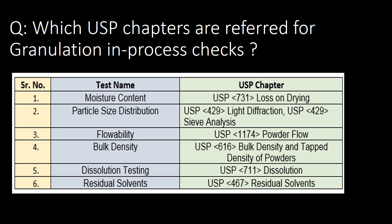Which USP chapters are referred to for granulation in-process checks? You can refer to the bullet table for six important granulation in-process checks along with their corresponding USP chapters.